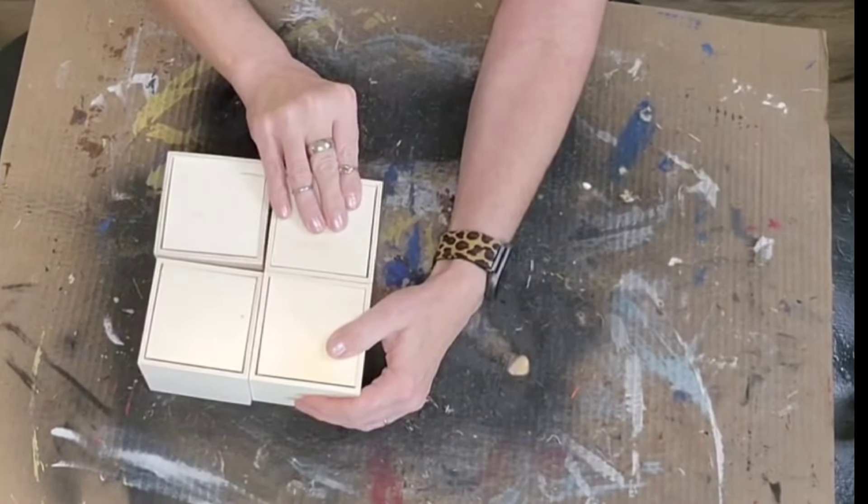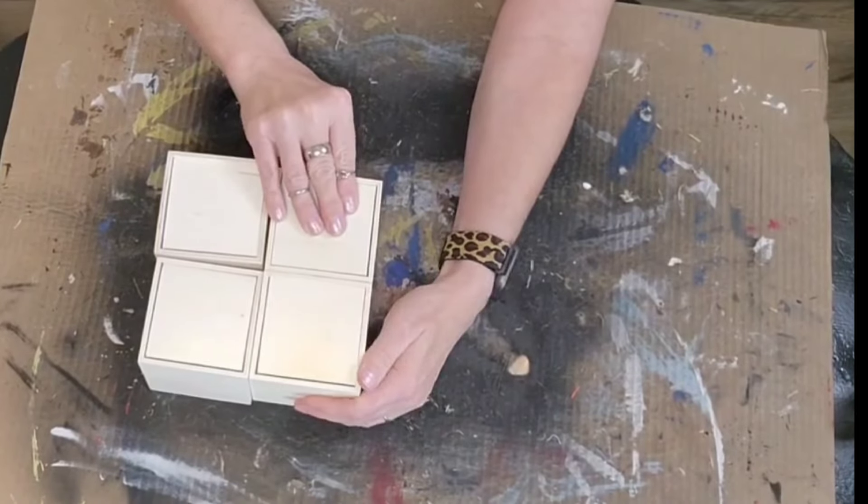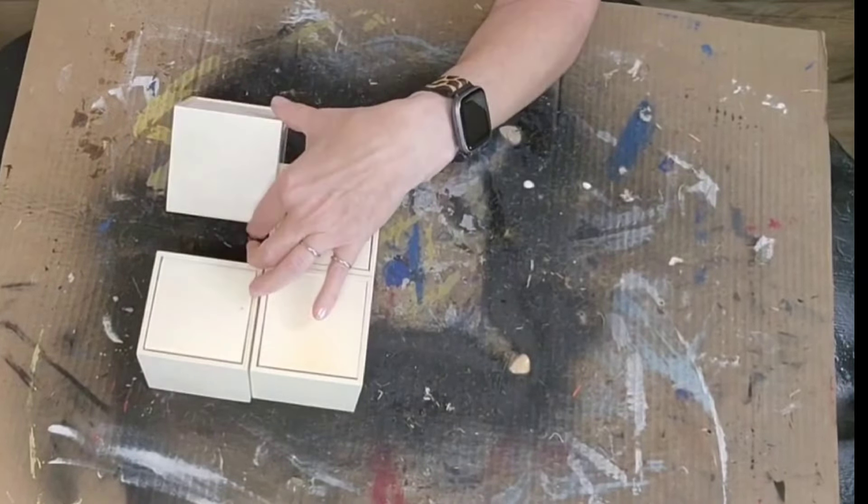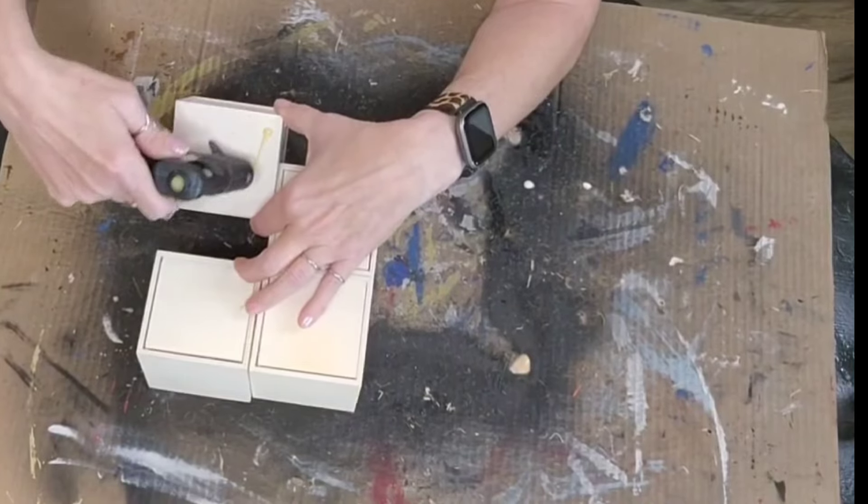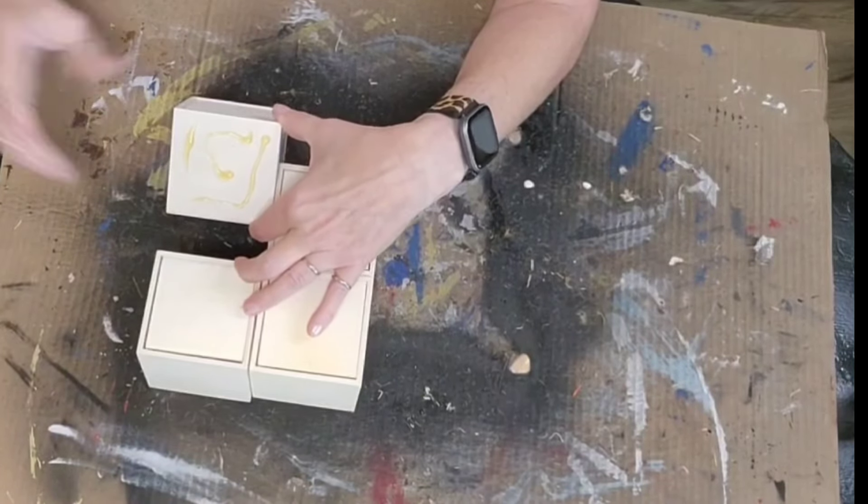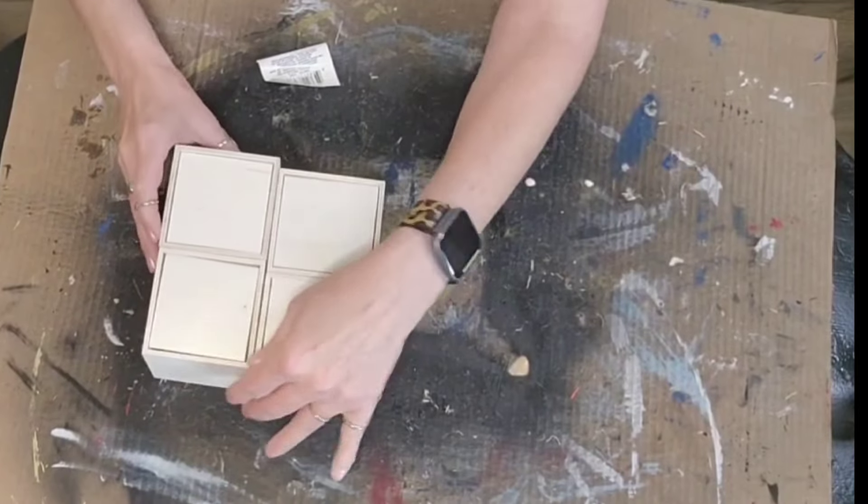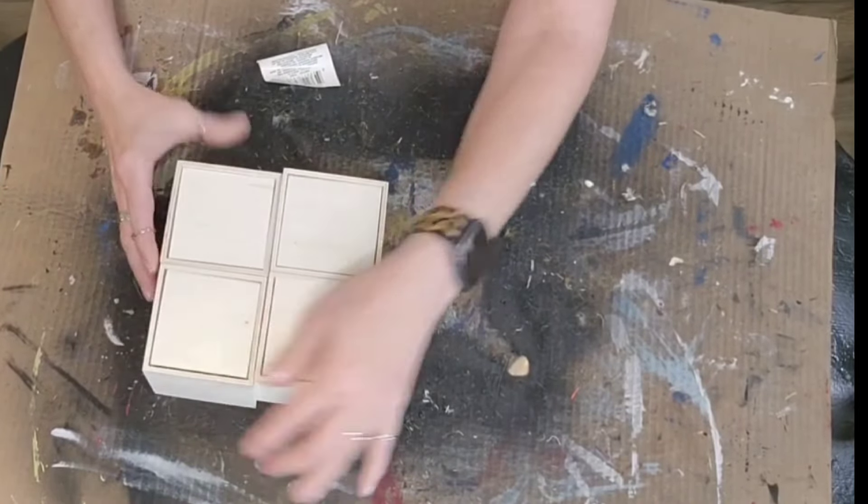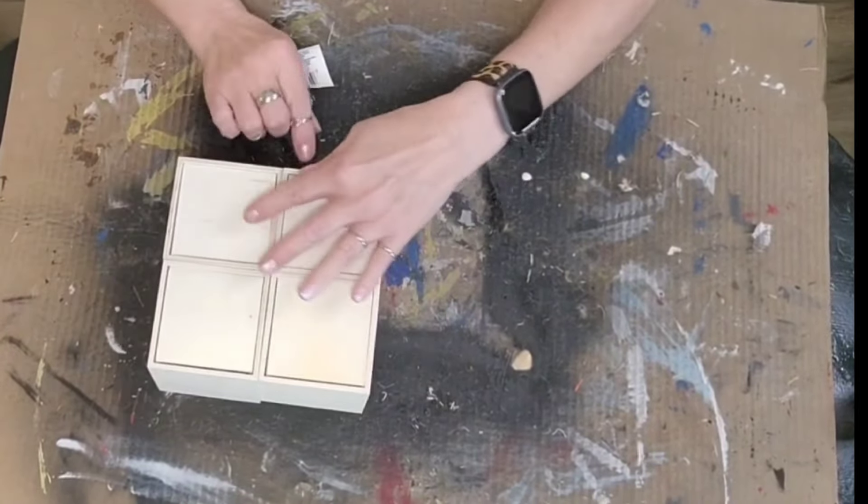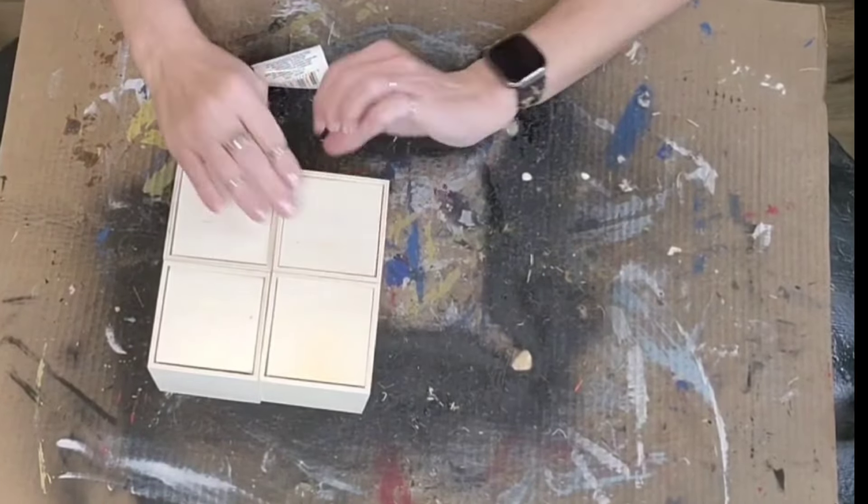Sometimes with these unfinished wood products they're not always a perfect square or perfectly even, but I made sure that they were lined up to where they were fairly square, and then I attached them with some wood hot glue. So I glued one on top of the other first.